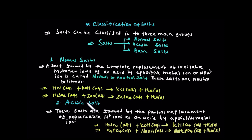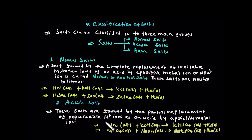If you want to see the acidic salt — this salt is formed by the partial replacement of the ionizable hydrogen of the acid by a positive metal ion. Some hydrogen remains unreplaced, making it an acidic salt.